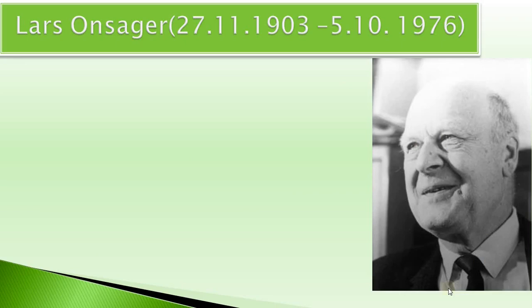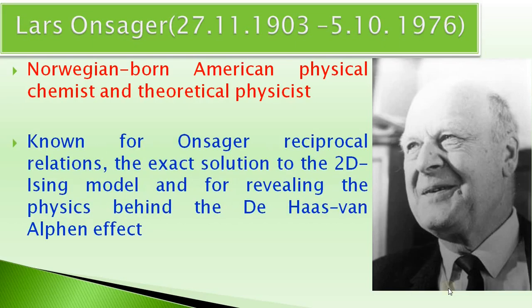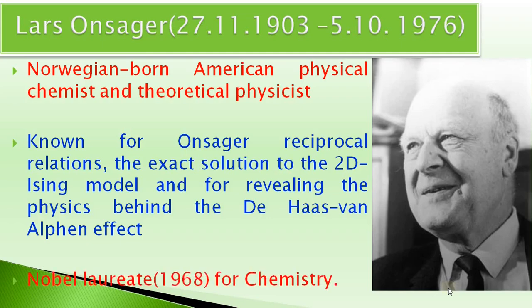Let us have a look into the life of Lars Onsager. Lars Onsager was born on November 27, 1903 in Oslo, Norway. He was a Norwegian-born American physical chemist and theoretical physicist. Lars Onsager is known for the Onsager reciprocal relations, which are the basis of thermodynamics of irreversible processes. He is also known for the exact solution to the 2D Ising model and for revealing the physics behind the de Haas-van Alphen effect. Lars Onsager was a Nobel laureate, awarded the Nobel Prize for Chemistry in 1968.